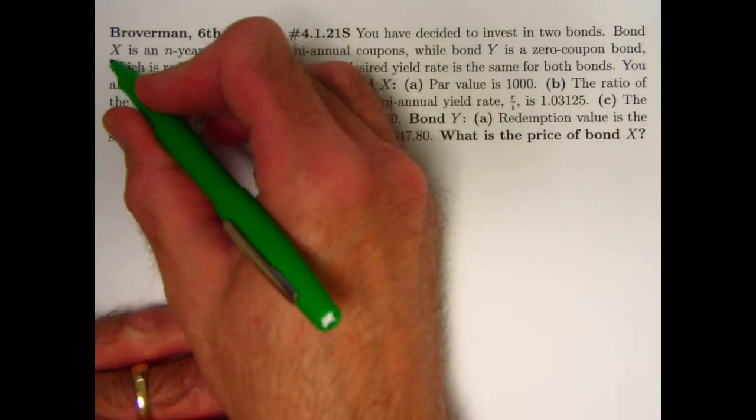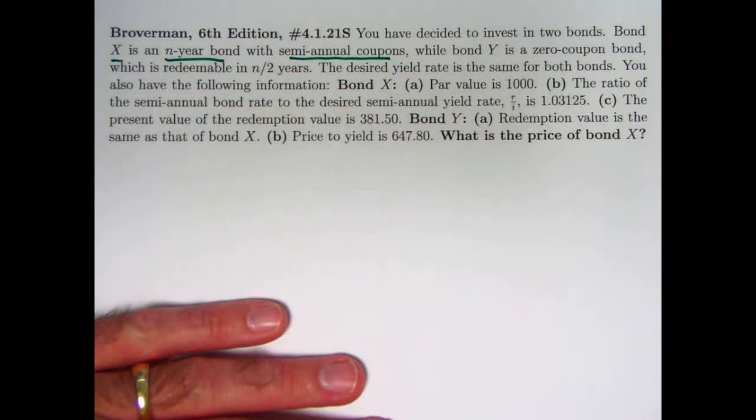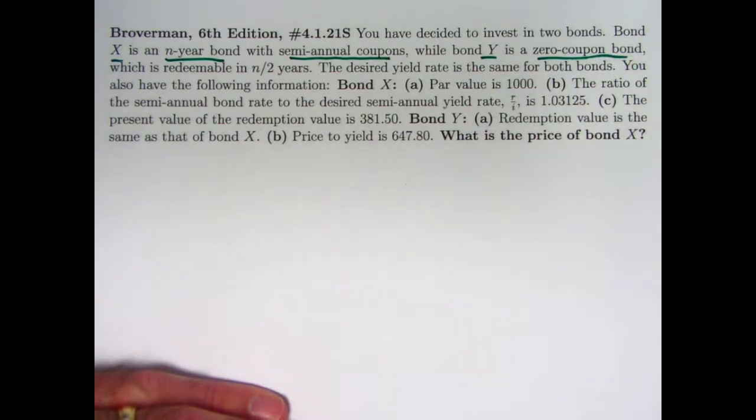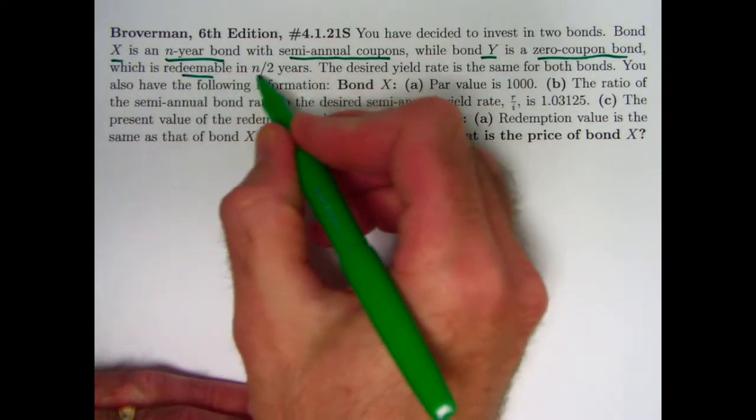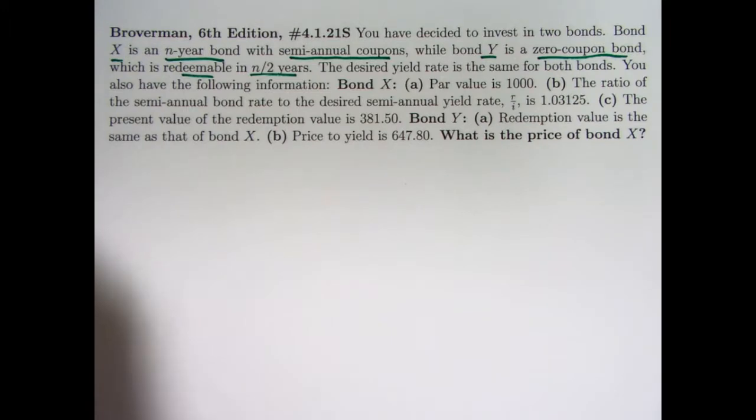You've got two bonds. Bond X is an N-year bond with semi-annual coupons, so there would be 2N coupons, while bond Y is a zero-coupon bond, no coupons. It's redeemable in N over 2 years. Note the redemption value is not necessarily the same as the par value or face value.